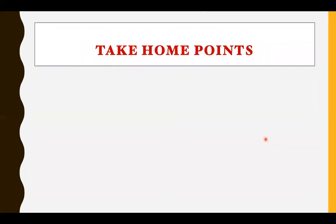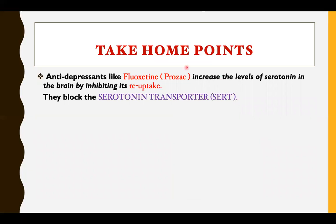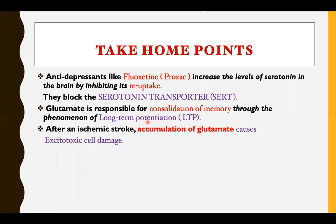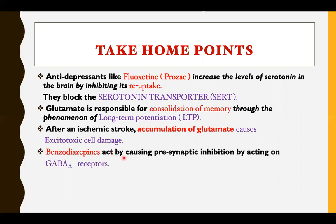The take-home points: Antidepressants like fluoxetine (Prozac) increase the level of serotonin in the brain by inhibiting its reuptake via the serotonin transporter SERT. Glutamate is responsible for the consolidation of memory through long-term potentiation, which is NMDA receptor-mediated. After an ischemic stroke, activation of glutamate causes excitotoxic cell damage. Benzodiazepines act by causing presynaptic inhibition via GABA-A receptors.